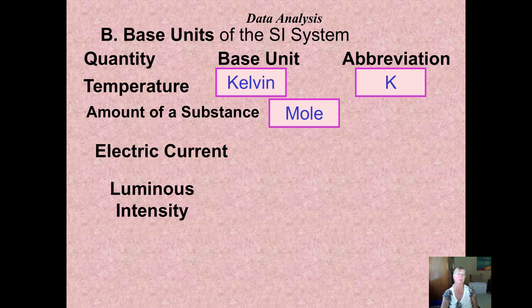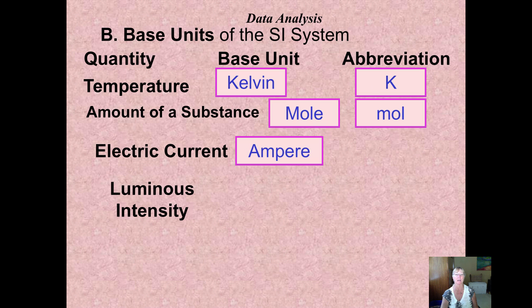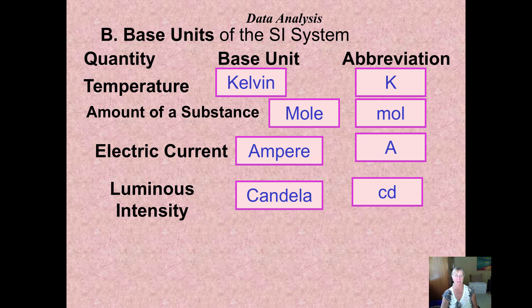The amount of a substance is probably new to you as well. We call that the mole, not much of an abbreviation there. We will not be using the ampere, abbreviated with A for amps. Or luminous intensity, candela is abbreviated with a CD. We don't use that in chemistry.